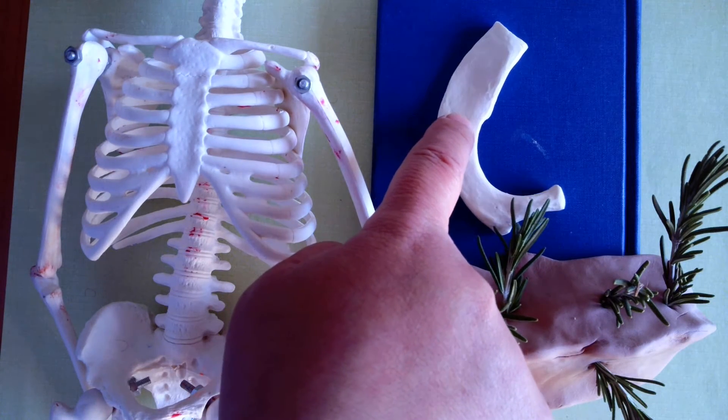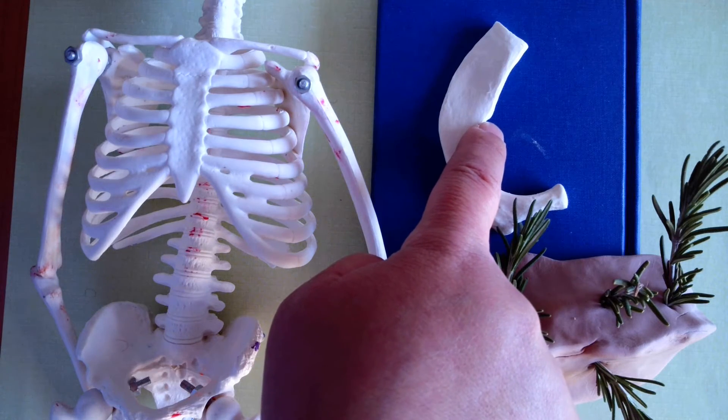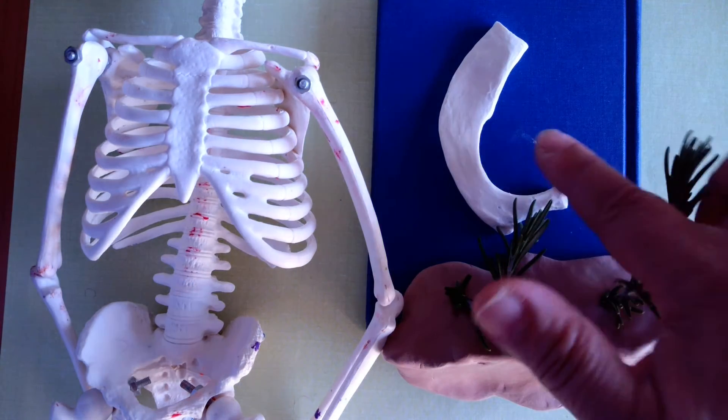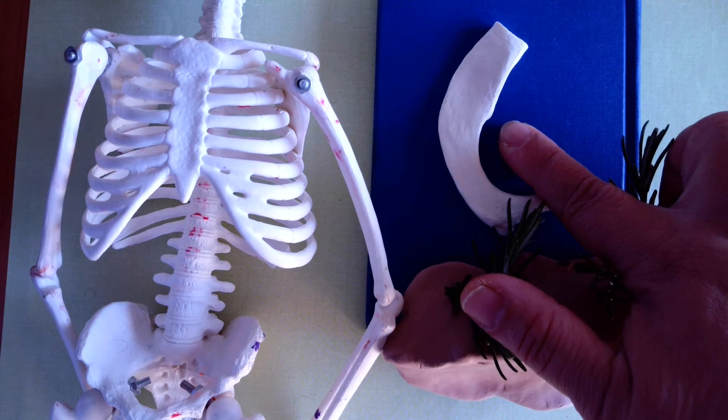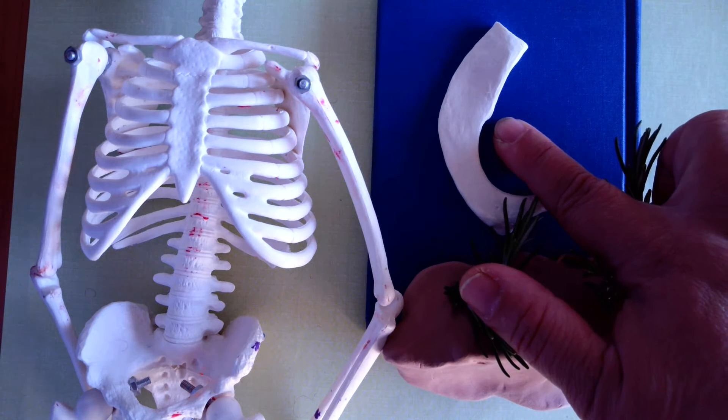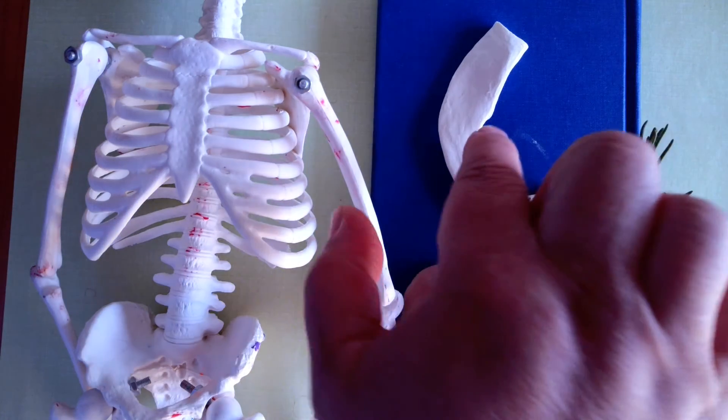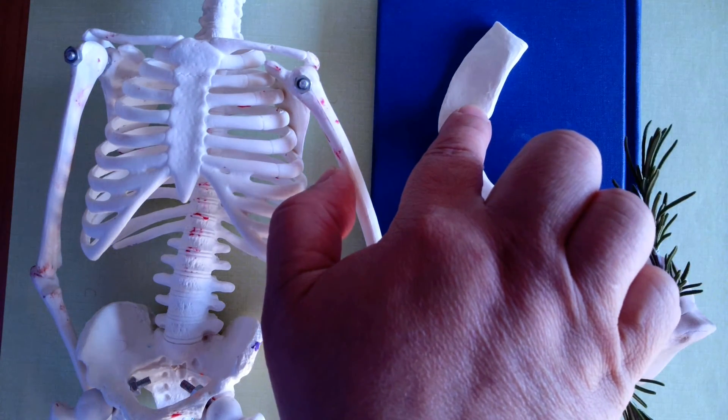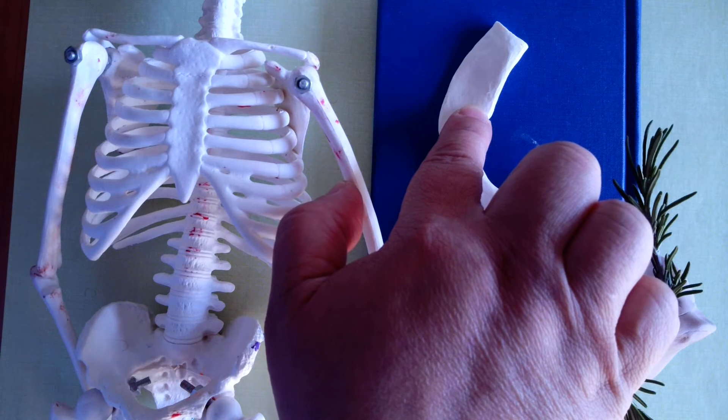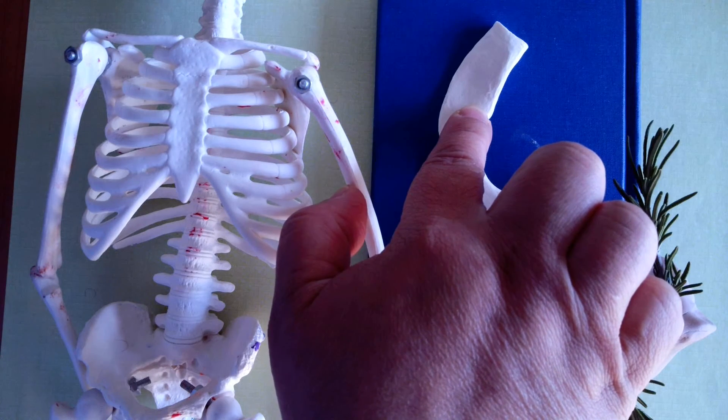Which usually ends at the internal border as a tiny pointed projection called the scalene tubercle, to which a muscle is attached. The muscle is called the anterior scalene muscle.